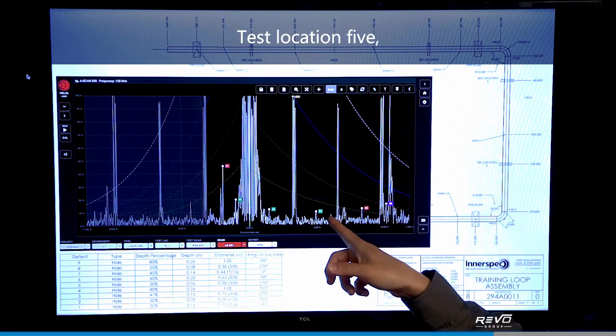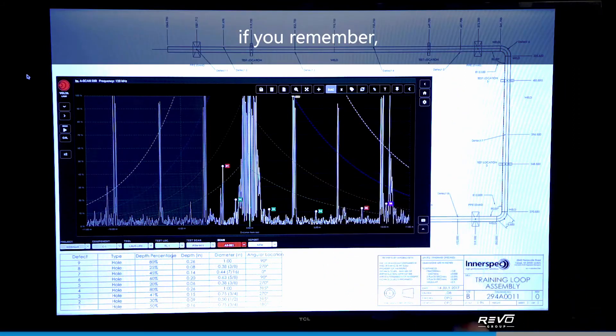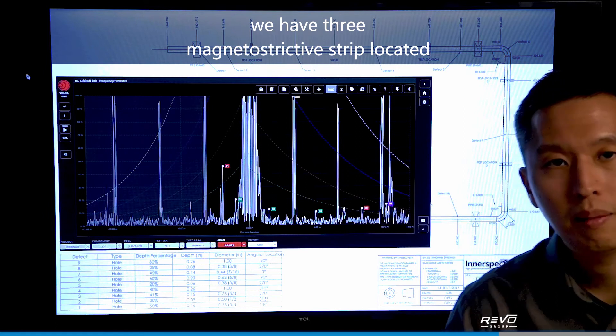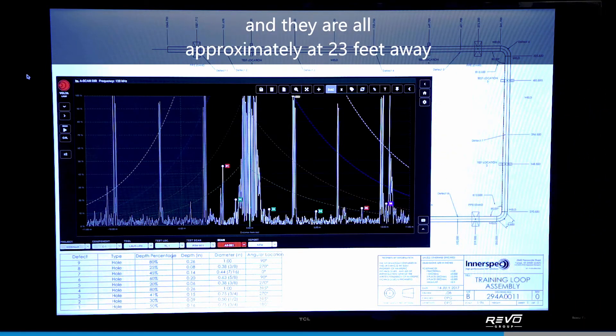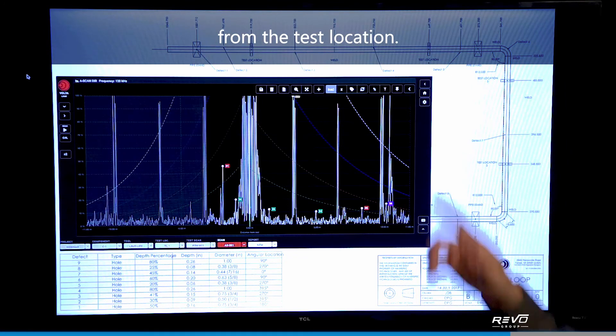Test location 5, if you remember we have 3 magnetostrictive strips located on test location 5 and they are all approximately at 23 feet away from the test location.